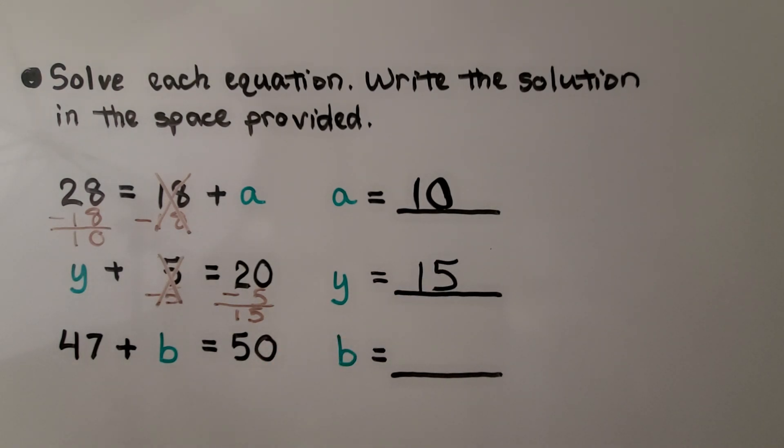Here we have 47 plus b is equal to 50. Now you could probably just do it in your head to know what we need to add to 47 to equal 50. But what we're doing is we're subtracting 47 from this side and we're subtracting 47 from this side. That's going to leave a 3. We've removed this by subtracting it. We have b is equal to 3.